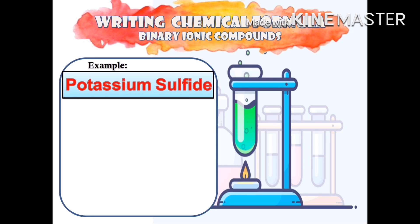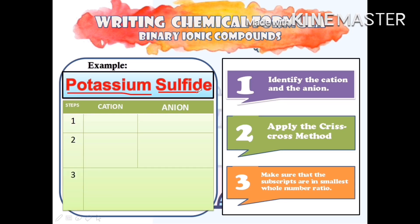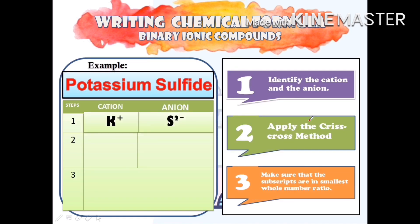Let us have another example: potassium sulfide. Again, to correctly write the formula of this compound, we follow the three steps. Step 1 is to identify the cation and the anion. Potassium is our cation and sulfide — or sulfur — is our anion. The chemical symbol of potassium is K. K belongs to group 1 of the periodic table, so it has a 1+ charge. Sulfur has a chemical symbol of S and a 2− charge. That is K⁺ and S²⁻.